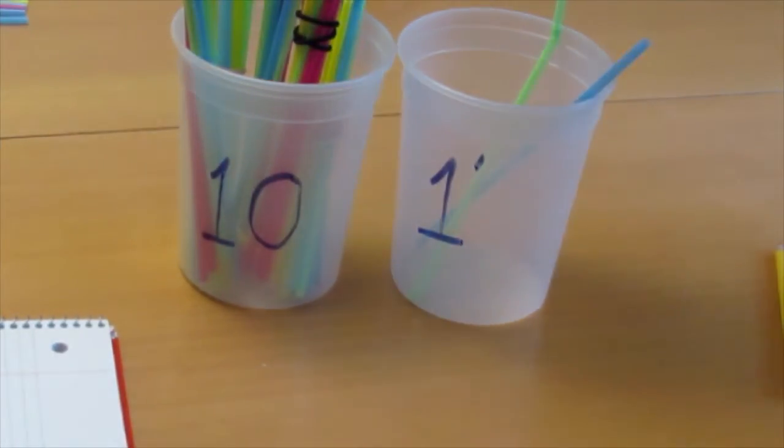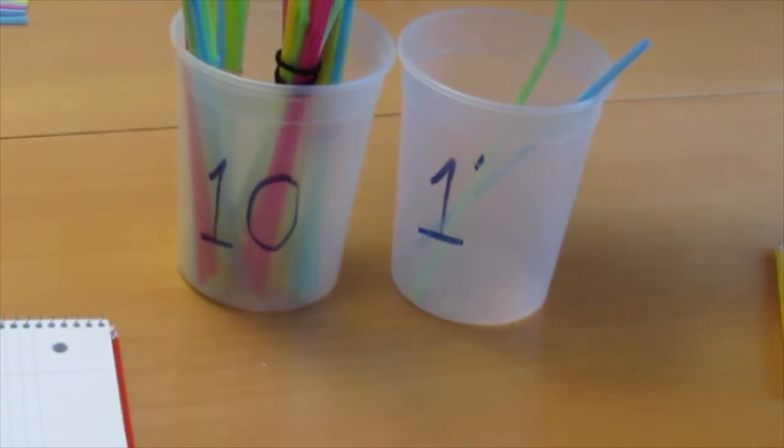So now we have a total of one, two, three, four, five tens and two ones. A total of 52.